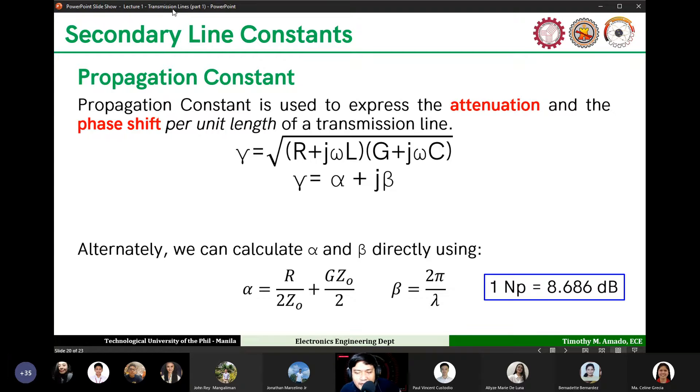Okay, types of transmission lines based on number of conductors and their geometry. We have coaxial cable, parallel wire line, balanced and unbalanced transmission line. What else did we study?